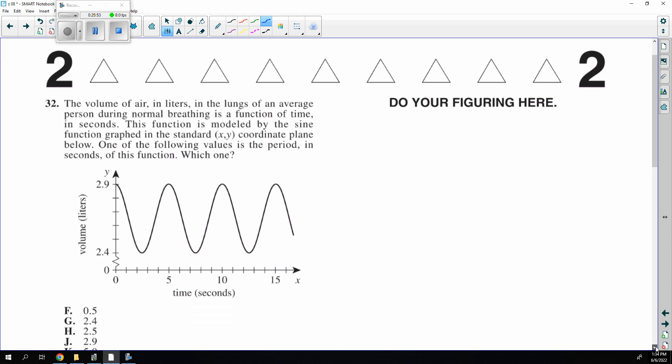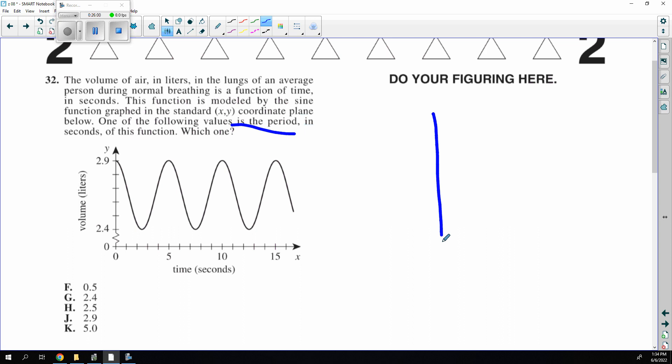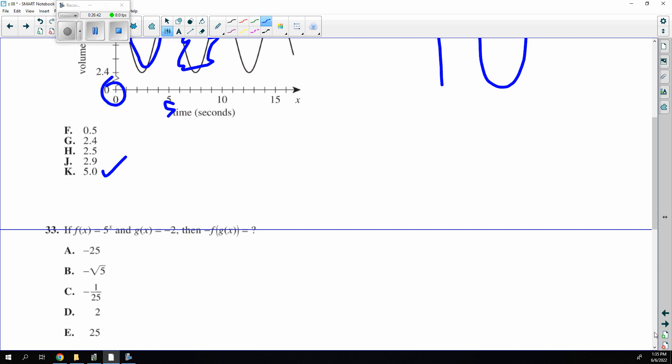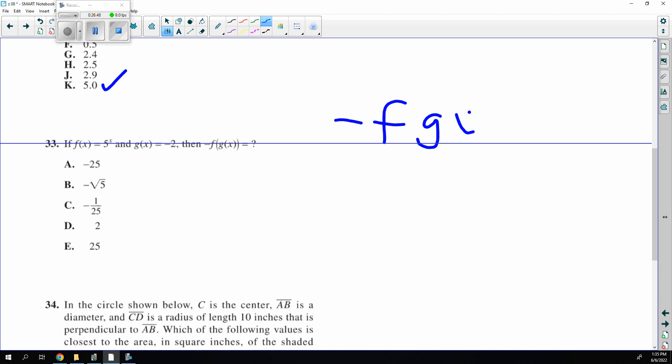This one's tough. It wants the period. And the period is typically 2 pi in a graph, because the period is how long it takes before it repeats. So that's a normal trig graph. This one's period starts at 0 and ends at about 5. So that's how long it takes to go through the whole cycle. If you notice, the second cycle would take to 10, the third cycle to 15, and so forth.